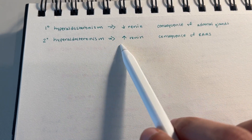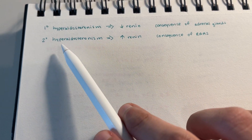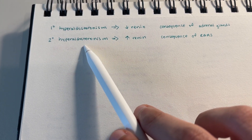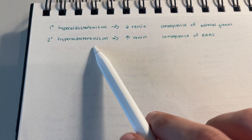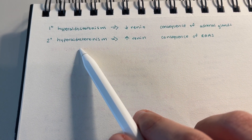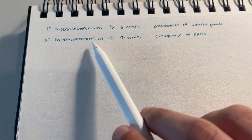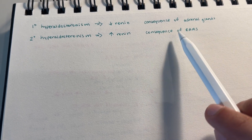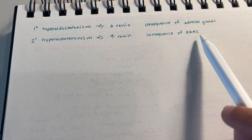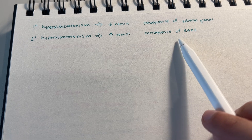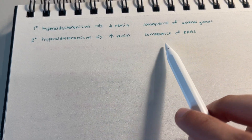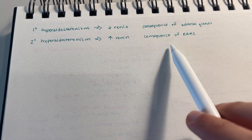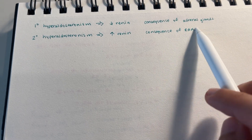So why is renin increased in secondary hyperaldosteronism? Secondary hyperaldosteronism means there's some secondary cause for the increase in aldosterone — it's not something wrong with the adrenal glands themselves. There is something wrong somewhere upstream of the adrenal glands. Specifically, there is some dysfunction in the renin-angiotensin-aldosterone system that's causing a lot of renin to be produced.